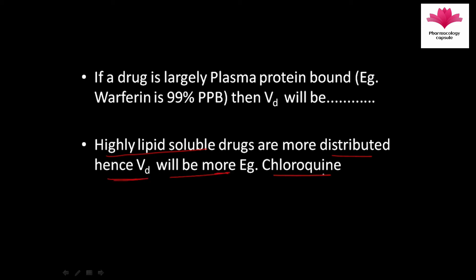An example is chloroquine, which has high affinity towards the liver, kidney, and other tissues, so it is distributed into other tissues and has a high volume of distribution. In contrast, warfarin has a low volume of distribution because it is 99% plasma protein bound.